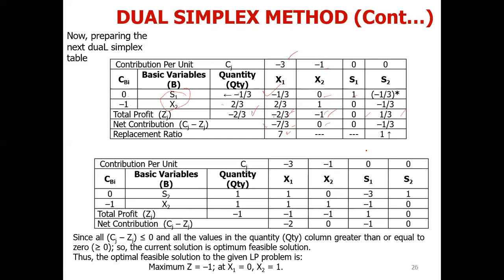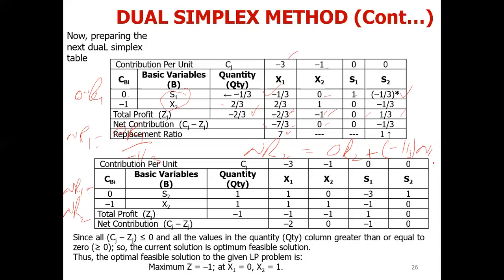S2 enters; its objective function coefficient is 0. We need to make the pivot element equal to 1. New R1 equals old R1 divided by minus 1/3. Then for new R2, we do: new R2 equals old R2 plus minus 1/3 times new R1, to eliminate the minus 1/3 element in R2. When we perform this: minus 3 plus 1/3 times the row gives 0.